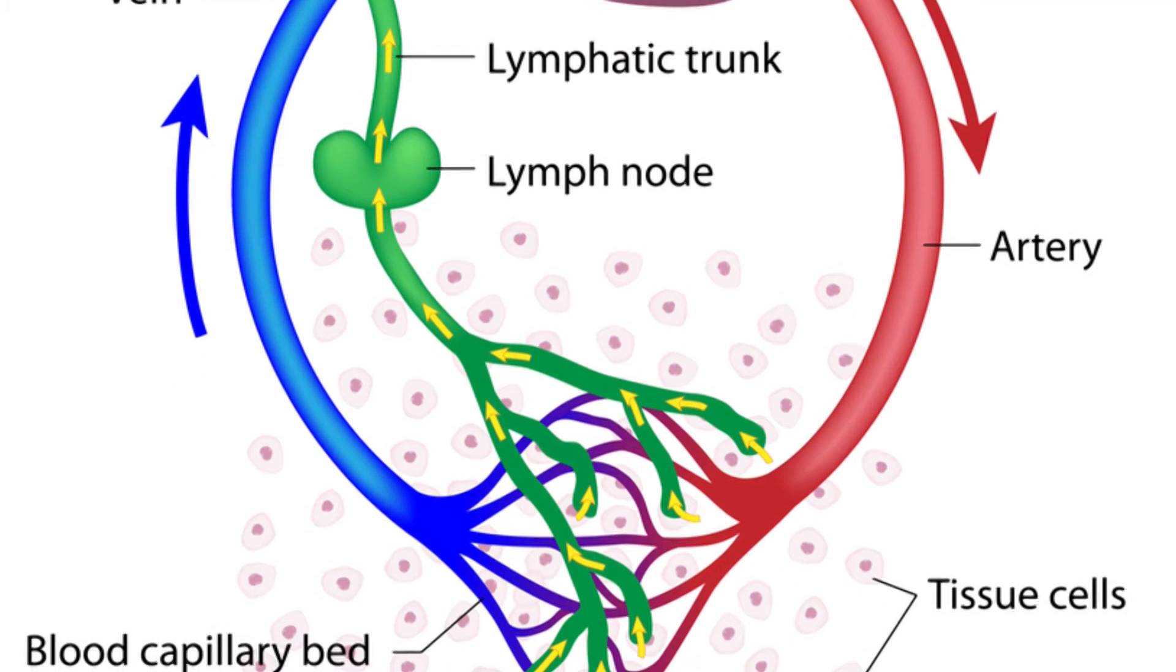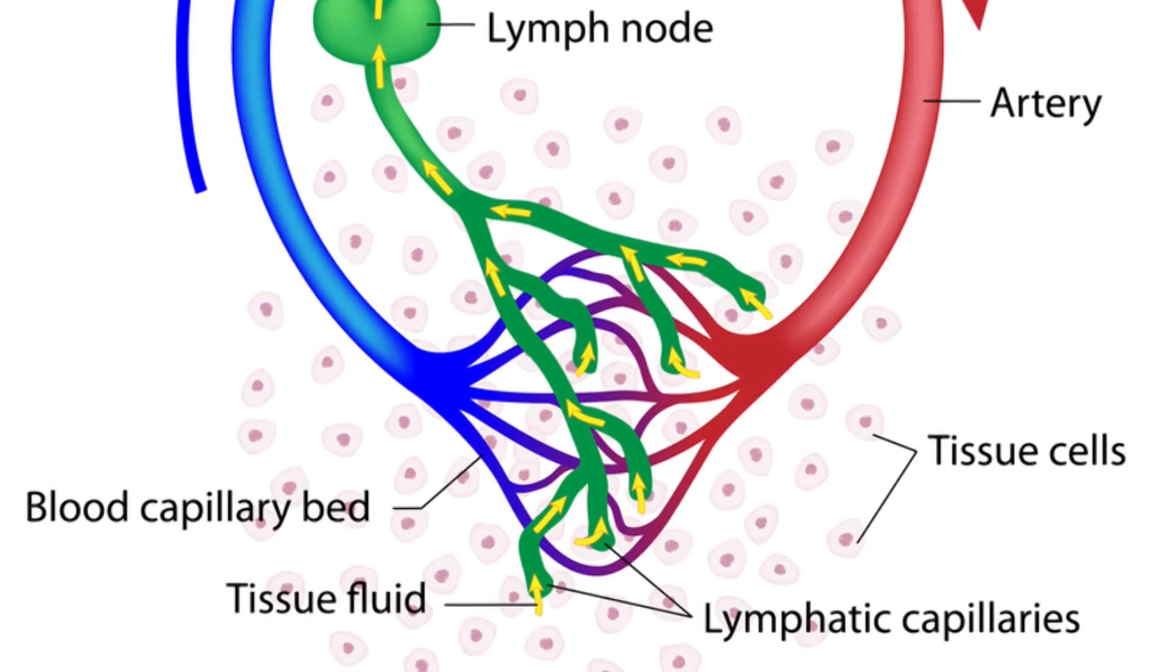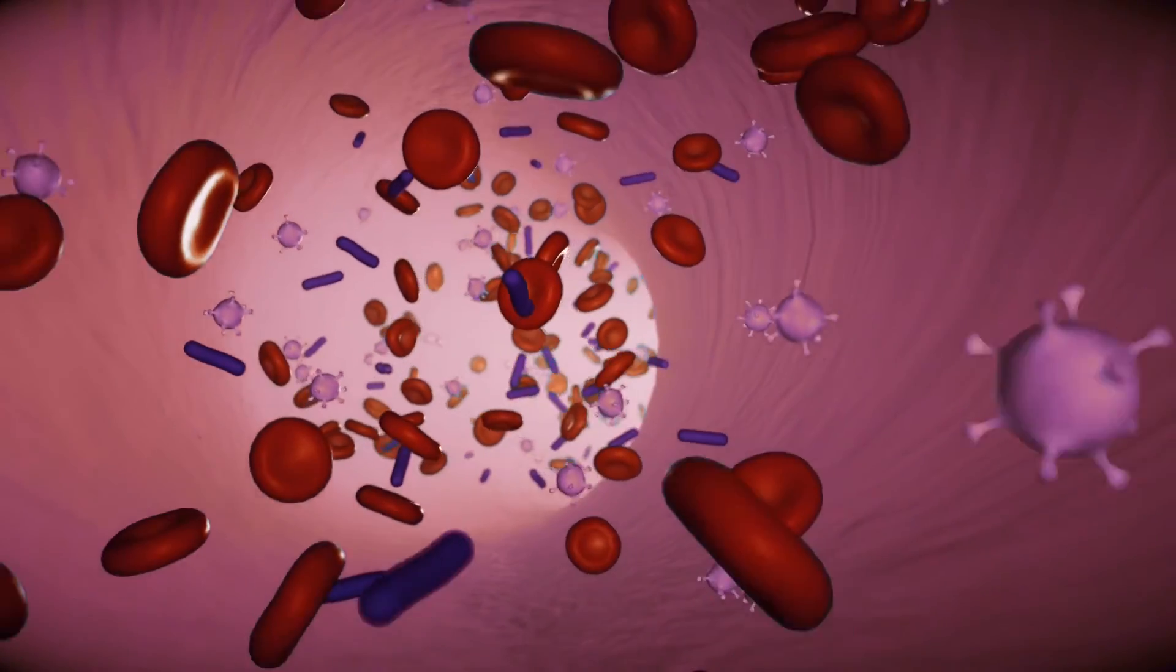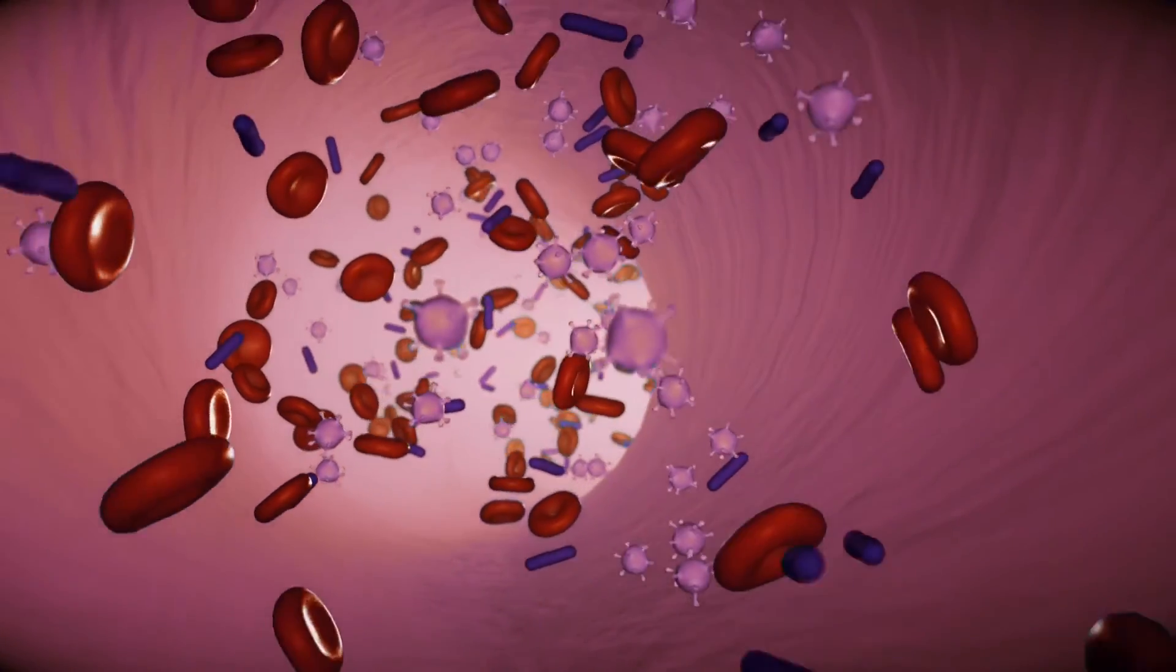Lymph is drained progressively towards larger vessels until it reaches the two main channels, the lymphatic ducts in our trunk. From there, the filtered lymph fluid returns to the blood in the veins.